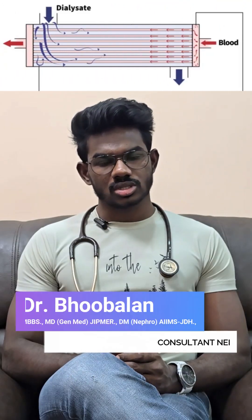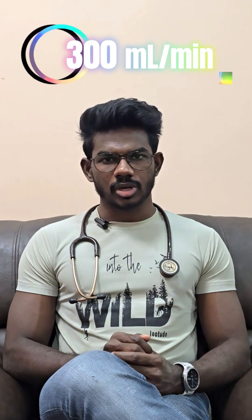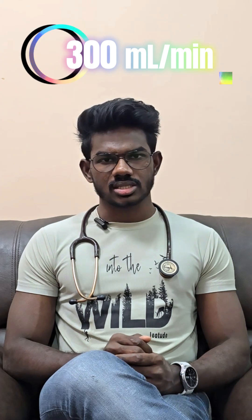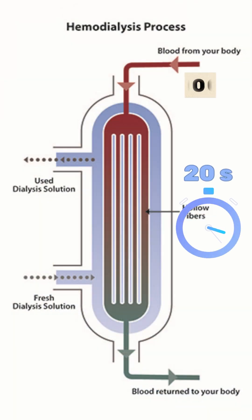A dialyser holds roughly 100 ml of blood at any given time. Imagine blood entering the dialyser with a urea level of 100 units. If you run the blood at 300 ml per minute, that 100 ml stays inside the dialyser for only about 20 seconds. With that short contact time, urea may drop from 100 to 40 units in a single pass. This 60% reduction between the inlet and the outlet blood urea level is what we call the extraction ratio.